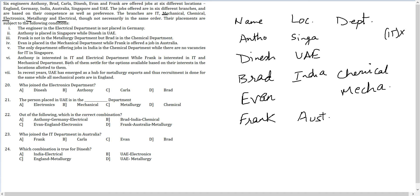Anthony is interested in IT and electrical department. While Frank is interested in IT and mechanical department. Both of them settle for options available based on the interest in the locations allotted too. Anthony is interested in IT and electrical department. He cannot get IT because he is in Singapore. So he will get electrical.